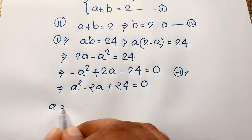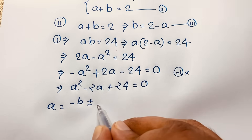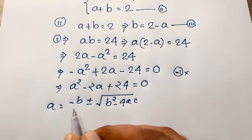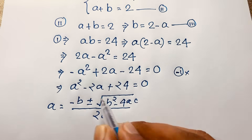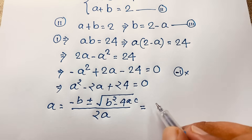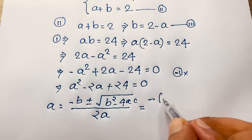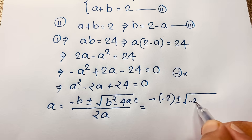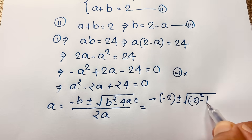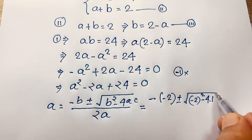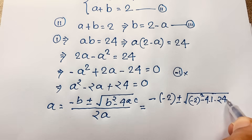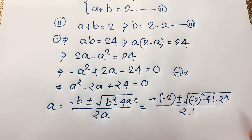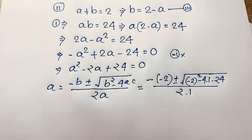So you can see: a equals negative b plus or minus square root of (b squared minus 4ac), over 2a. If I apply this quadratic formula here, then b is negative 2, so it becomes: negative of negative 2, plus or minus square root of (negative 2 whole squared minus 4 times a times c), where a is 1 and c is 24, over 2 times 1.